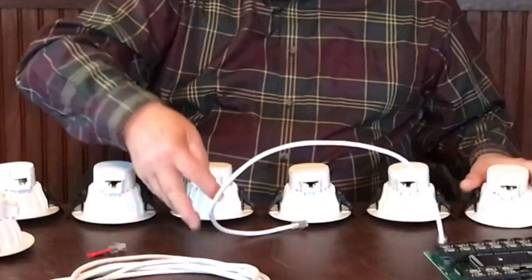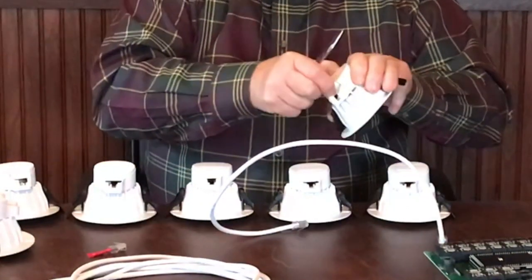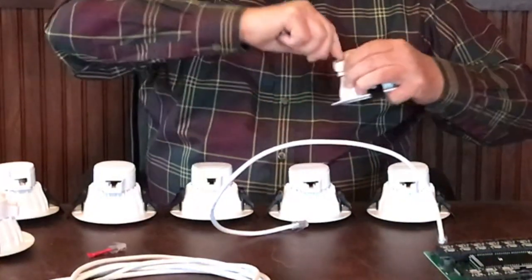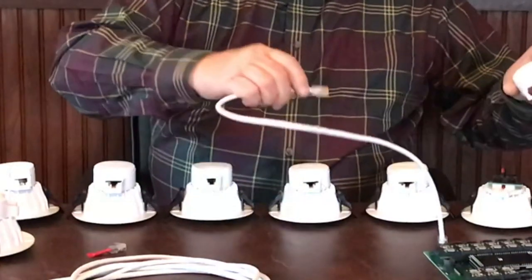So we plug in our wire that we've run to that closet and take our first light fixture. Now sometimes these dust covers are hard to get off, but if you just take a knife or a screwdriver, you can pop them off real easy.